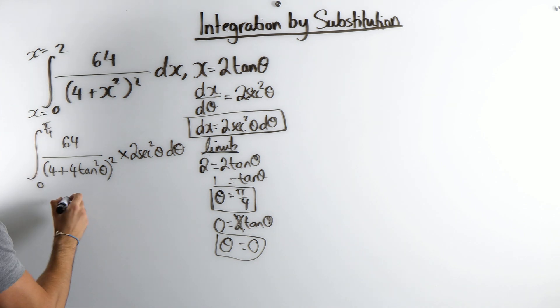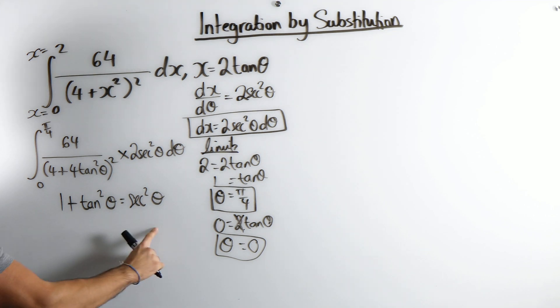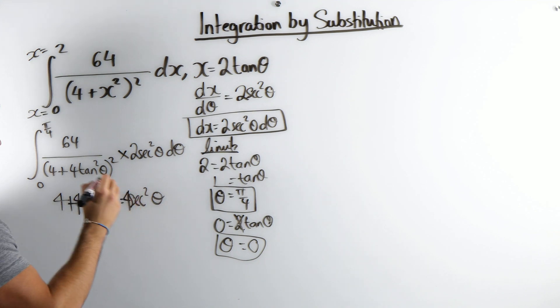We know that 1 plus tan squared is sec squared. So if I times through by 4, I get 4 sec squared. But then we're squaring it.